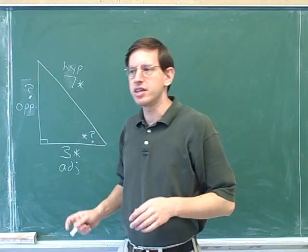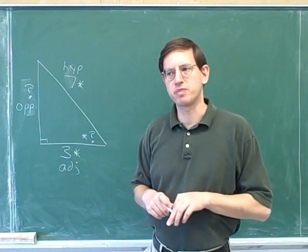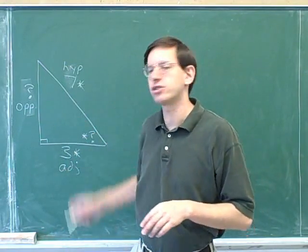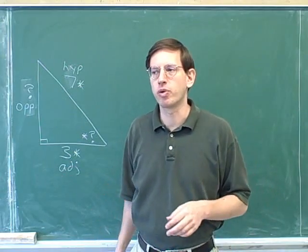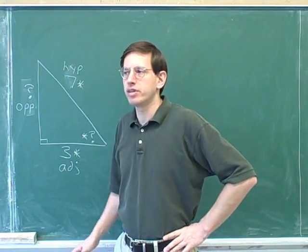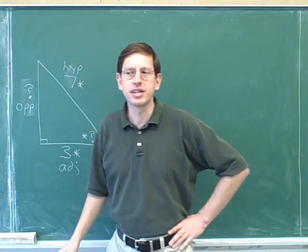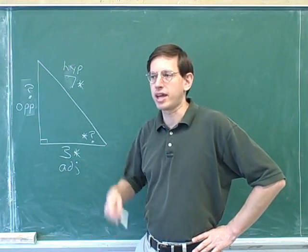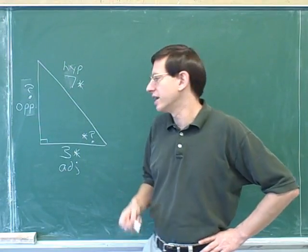Now you might have recognized that this problem was somewhat similar to the previous problems because, again, you were given two sides. This is another problem where you were given two sides. We know that when you're given two sides, you don't need trig functions to find the third side. If you're given two sides, you can just use the Pythagorean theorem to find the third side.